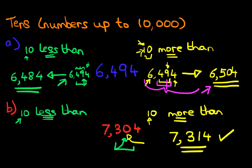So the number would be 7,000, which doesn't change. And instead of it being 3,0, it's going to be 2,9. Remember the 3,0 is going back by 1. 2,9,4. And so 10 less than 7,304 is 7,294.